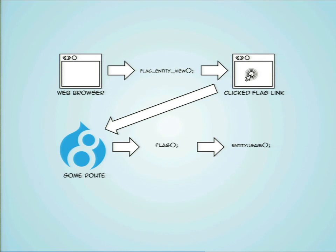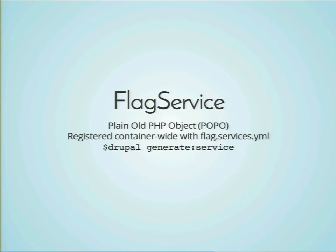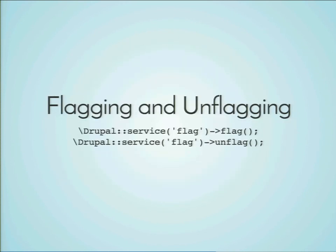In Drupal 7 we had a straight function called flag, but that's not really the Drupal 8 way. So in Drupal 8 we created a new flag service. The flag service is a plain PHP object registered container-wide in a file called flag.services.yaml. It allows us to compose other functionality from other modules as well as other pieces in Drupal, and it creates our primary storefront for our module — this is where the API lives. You can create a basic service structure with Drupal Console using 'generate:service'. If you ever need to flag anything in Drupal 8, you call the service from the container, get the flag service, and call the flag or unflag methods.